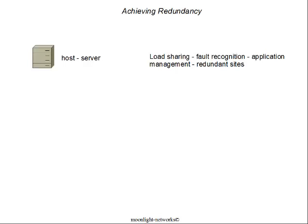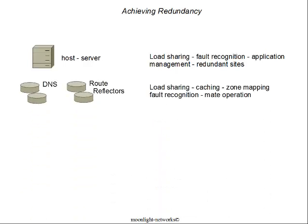Host servers achieve reliability through load sharing — there are many hosts typically serving large sites like Google. Load balancer servers, acting as layer 2 switches for the host service, often have fault recognition mechanisms that send traffic to working servers rather than those that are offline or failed. Application management is also run on many host servers, checking the application and restarting it if it fails. Finally, for network connectivity there are redundant sites, so if one data center loses connectivity, other redundant sites can pick up the load.